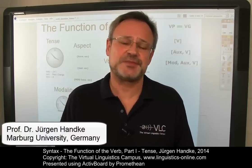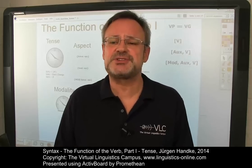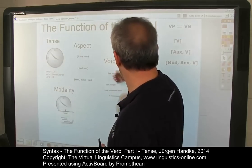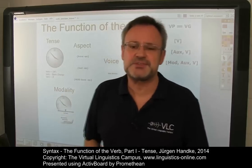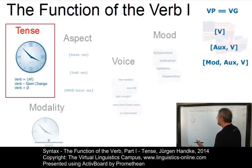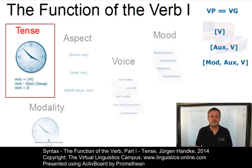Welcome. This e-lecture is the first of a series of e-lectures that investigate the function or meaning of the verb group, in particular of the finite verb group. Several functional categories can be associated with the verb group: tense, aspect, voice, mood, and various types of modality. The focus of this first e-lecture is on tense. But what exactly is tense? As we will see later, tense is the grammatical realization of time by means of verbal inflection. So let us look at time first.